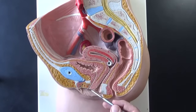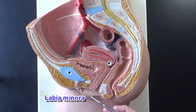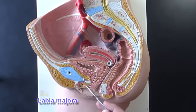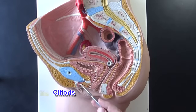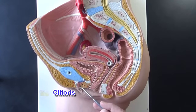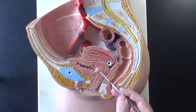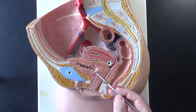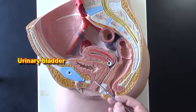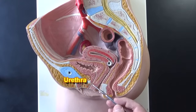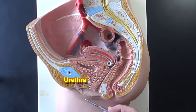Here we can see a better view of the labia minora and labia majora, and here would be part of the clitoris. This is erectile tissue in the female, analogous to the corpus cavernosum in the male. This right here is the urinary bladder, and here we can see the urethra exiting the urinary bladder bringing urine from the bladder outside the body.